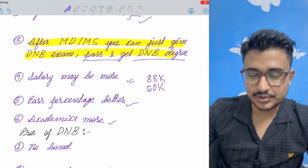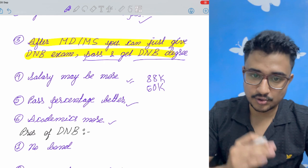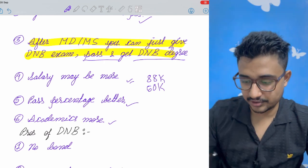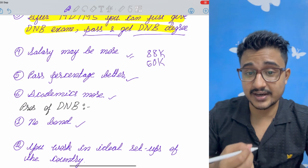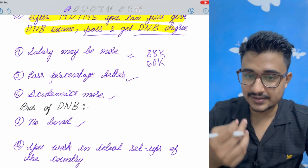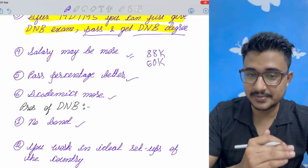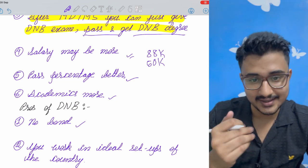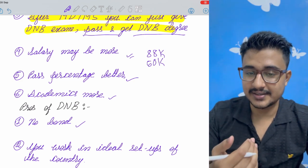Now coming to the pros of DNB and this is mainly in private setup. I said private setup always preferred than a government hospital. So here there is no bond. This is the biggest advantage of DNB. Like some of my friends are opting for DNB medicine. They are also getting MD medicine but they are opting for DNB medicine because there is no bond and they can do the DM just after completing their course.